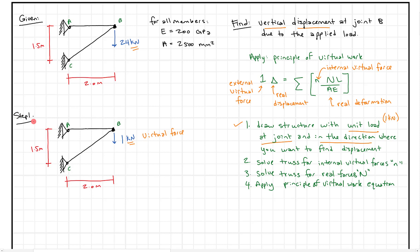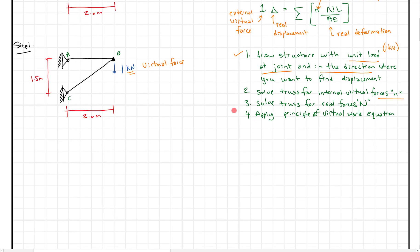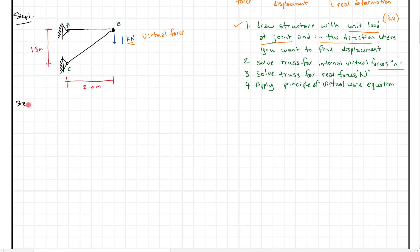Step two: solve this truss for the internal virtual forces, which we call little n. With a two-bar truss, especially with a horizontal member, this is something that could show up on the FE and is a bit simpler. To do that, I'm going to look at a free body diagram of joint B.